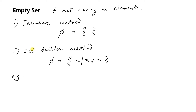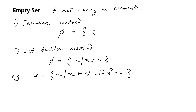Another example: let A be the set of all x such that x belongs to the natural numbers and x squared equals minus one. There is no natural number whose square gives minus one — that concept belongs to complex numbers — so A is an empty set, equal to phi.